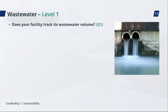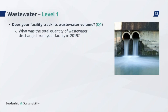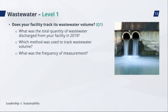We actually see that quite a lot of factories do not track their wastewater volume. You may be tracking incoming water into the factory, but not measuring your wastewater volume — and that is what this question asks about. The question is: what was the total quantity of wastewater discharge from your facility, and which method was used to track it? In some cases there are only estimations, which are not as accurate as actual measurements. Additional sub-questions ask about the frequency of measurement — continuous, daily, weekly, or monthly.